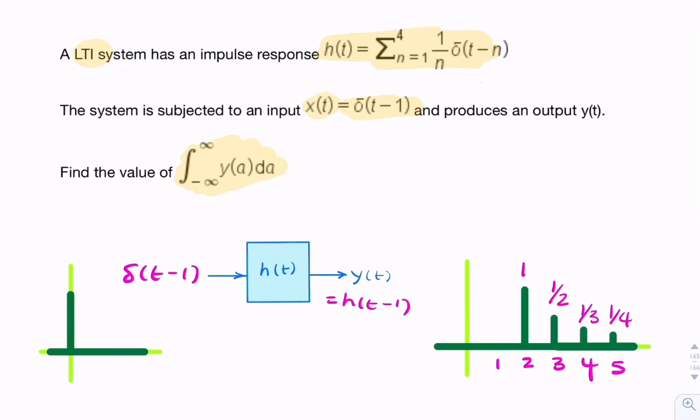That wouldn't affect the amplitudes, or the areas—the weightings, I should say. These coefficients wouldn't change. They remain as they are because they're determined by n, not by the delay. Remember, it's a time invariant system, so the shape of the response shouldn't change with time.